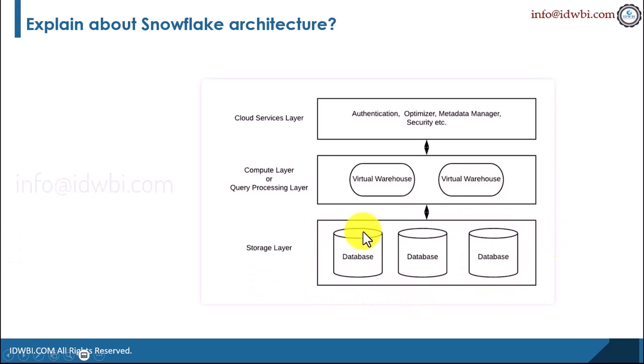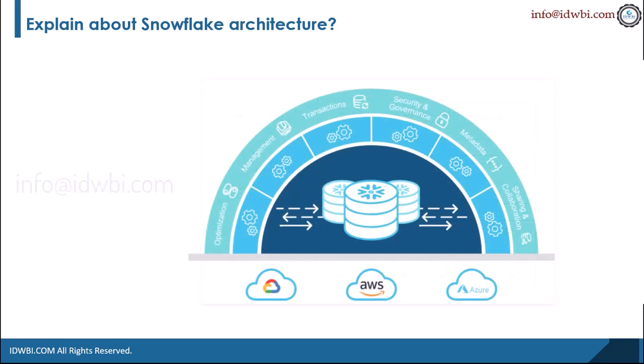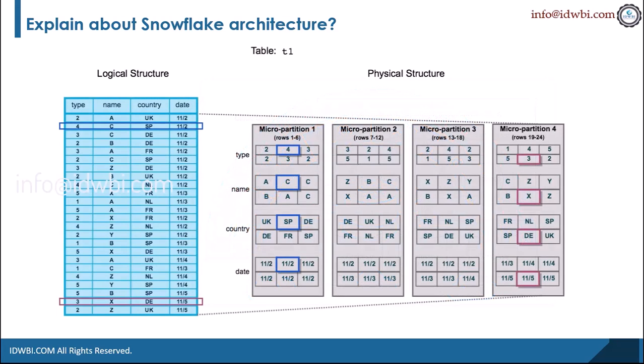Snowflake relies on scalable cloud blob storage available in clouds like Amazon Web Services, Azure and GCP. Relying on massively distributed storage systems enables Snowflake to provide a high degree of performance, reliability, availability, and capacity.